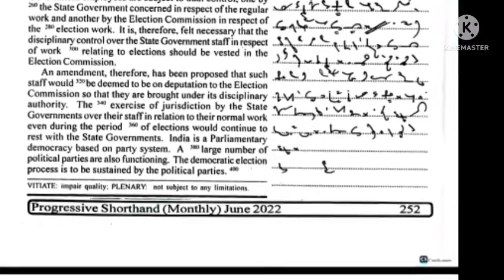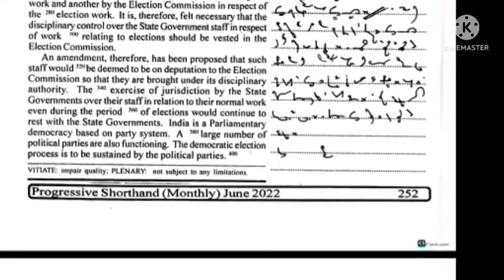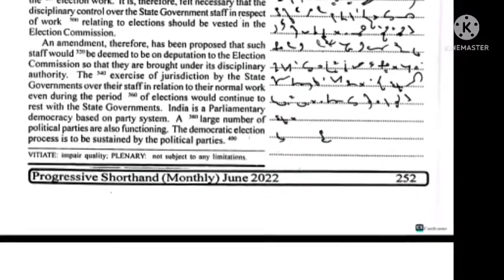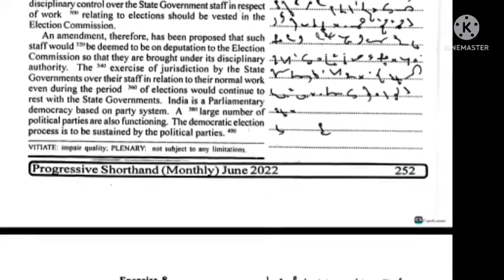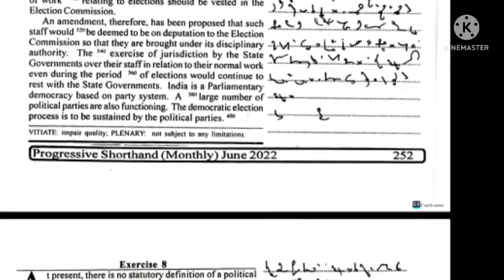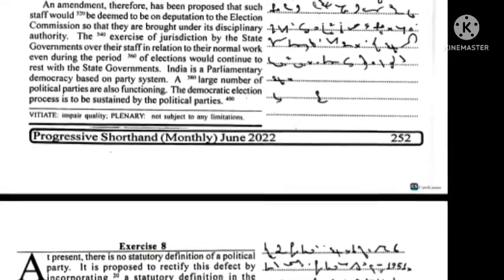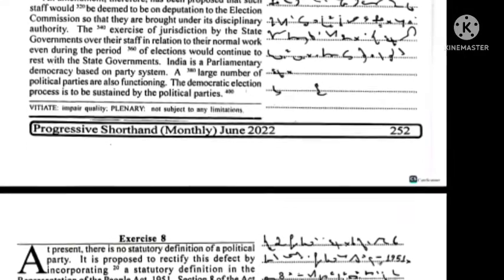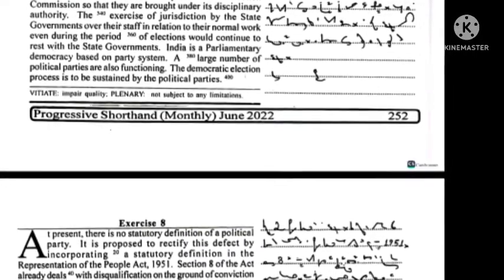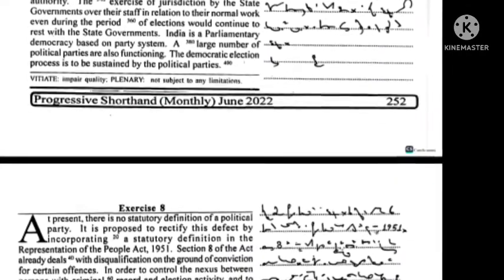The exercise of jurisdiction by the state governments over their staff in relation to their normal work, even during the period of elections, would continue to rest with the state governments. India is a parliamentary democracy based on a party system, and a large number of political parties are functioning. The democratic election process is to be sustained by the political parties. At present there is no statutory definition of a political party; it is proposed to rectify this defect by incorporating a statutory definition in the Representation of the People Act, 1951.